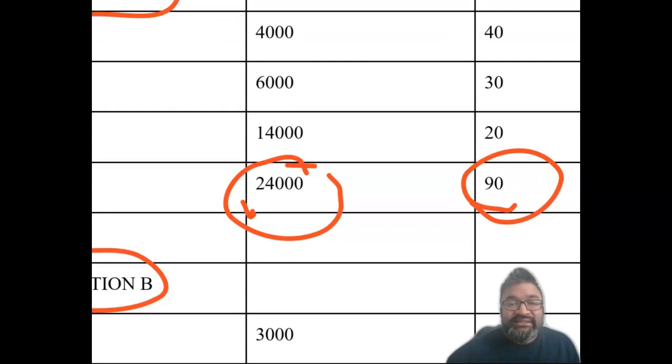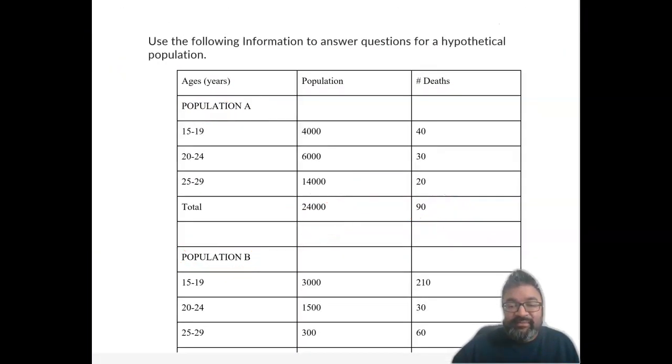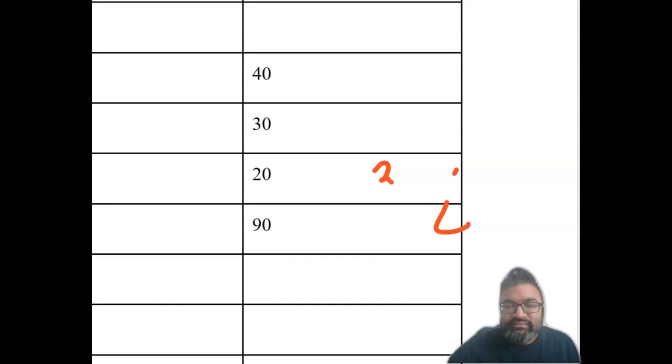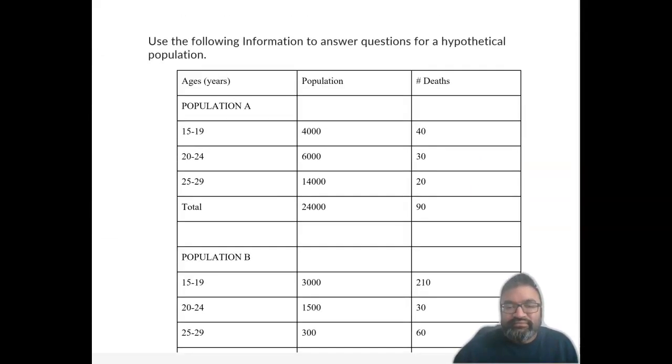So when you're taking a look at this, the answer for crude mortality rate is, let me scroll down here, the crude mortality rate is 3 over 8, 3 eighths. So this is 3 eighths,